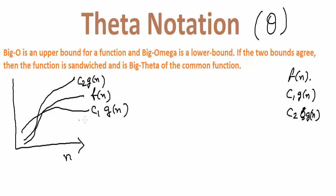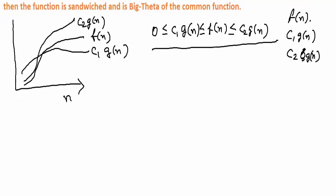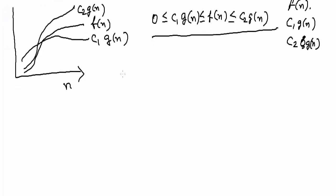This explains the theta notation, so we need to define something like this. Our condition is something like 0 less than c1 g(n) must be less than f(n), and this f(n) must be less than c2 g(n). This right here is the main condition.